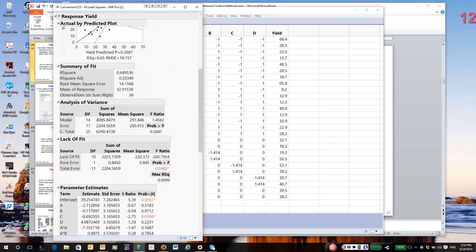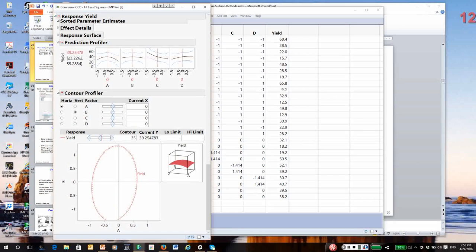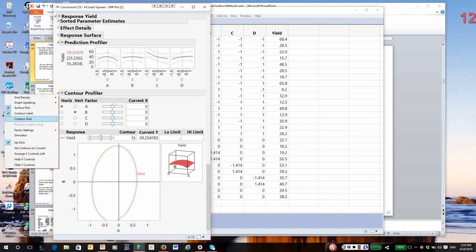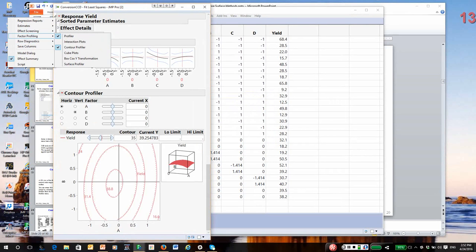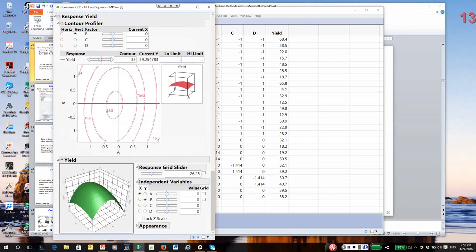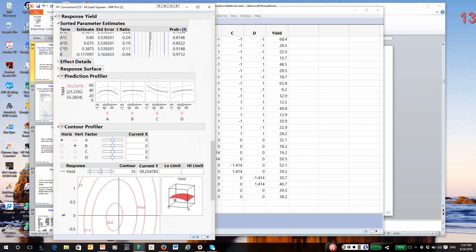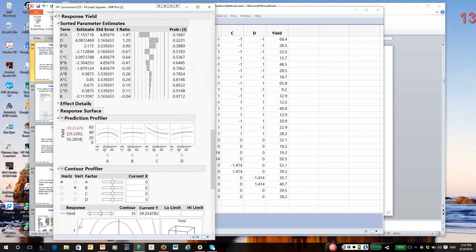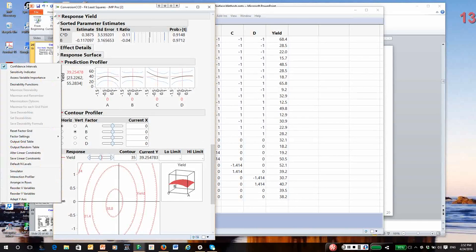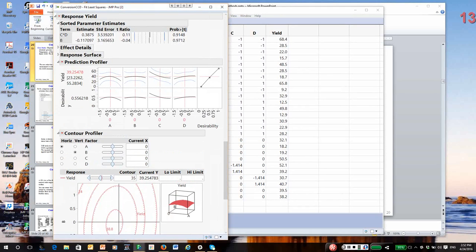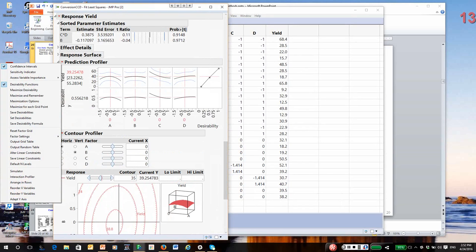Again, we can do things like under Profiling, we can look at the Contour Profiler, and we can take a look at the Surface Profiler. Of course, with four inputs, we can only look at slices through the region. We could go through and do some simplification of the model, but at this point I'm just going to go ahead and once again show desirability. We want to maximize yield.